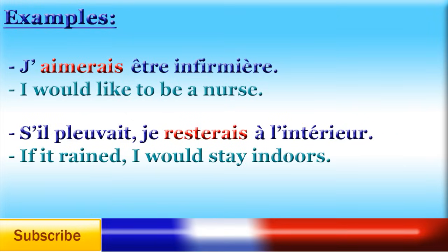For example: 'J'aimerais être infirmière' — I would like to be a nurse. 'S'il pleuvait, je resterais à l'intérieur' — If it rained, I would stay indoors. The conditional tense is used in the first sentence because it talks about ambitions, and it is used in the second part of the second sentence because it talks about what I would do if it rained — I would stay indoors. In other words, it talks about what would happen if something else happened.